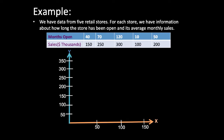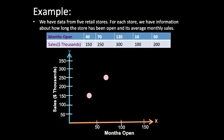To draw the scatter plot, we draw x and y axes. Months open goes on the x-axis because it is the explanatory variable, and sales in thousands of dollars goes on the y-axis. The data points are: (40, 150), (70, 250), (120, 300), (10, 100), and (50, 200). Therefore, this is the scatter plot for this data set.